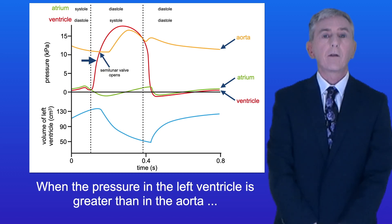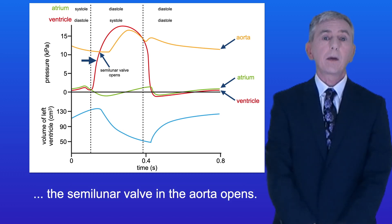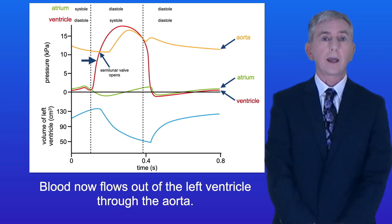When the pressure in the left ventricle is greater than in the aorta, the semilunar valve in the aorta opens. Blood now flows out of the left ventricle through the aorta.